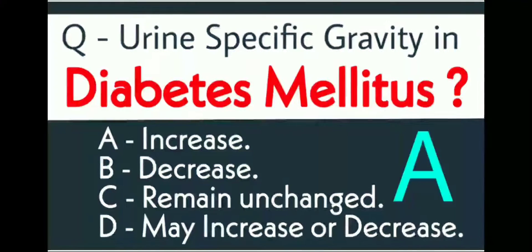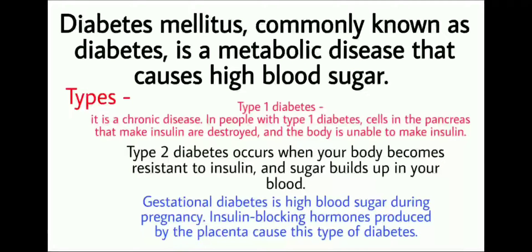The right answer is: urine specific gravity in diabetes mellitus increases. Diabetes mellitus, commonly known as diabetes, is a metabolic disease that causes high blood sugar.